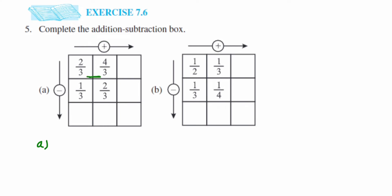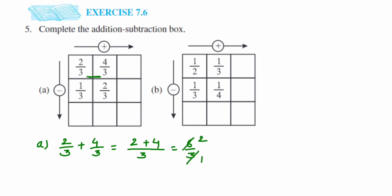First, we add 2/3 and 4/3. Both fractions are like fractions since the denominators are the same. So we keep the denominator 3 and add the numerators: 2 plus 4 equals 6, giving 6/3. We can cancel — 3 twos are 6 — so the answer is 2.